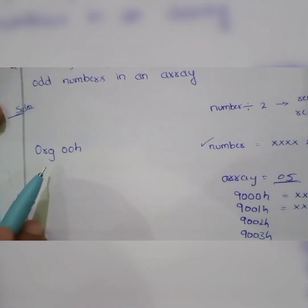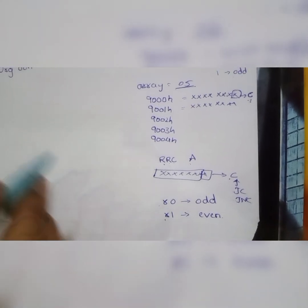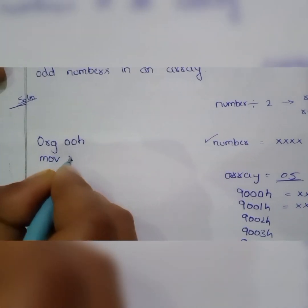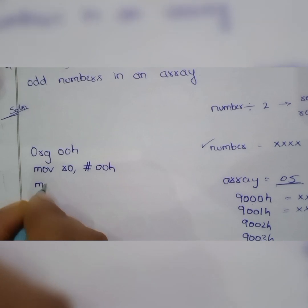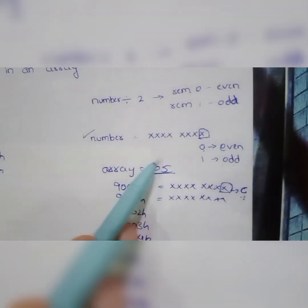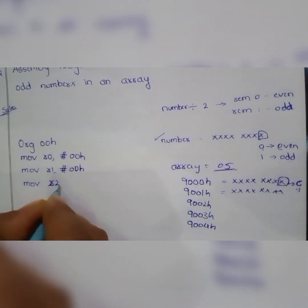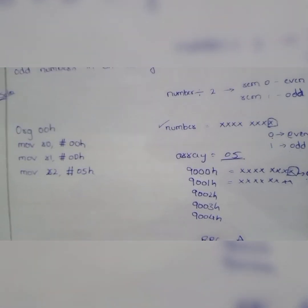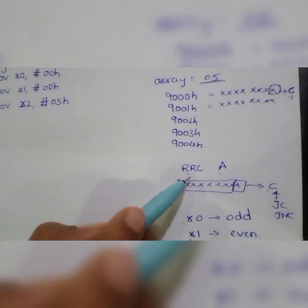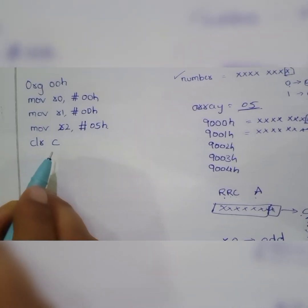We shall store the program in ROM starting from memory location 00H, so we write ORG 00H. Since we are using registers R0 and R1 to store the count, let us initialize them to 0: MOV R0, #00H and MOV R1, #00H. We have an array size of 5, so we store this count in register R2: MOV R2, #05H. As we are also using the carry flag, we clear it initially using the CLRC instruction.